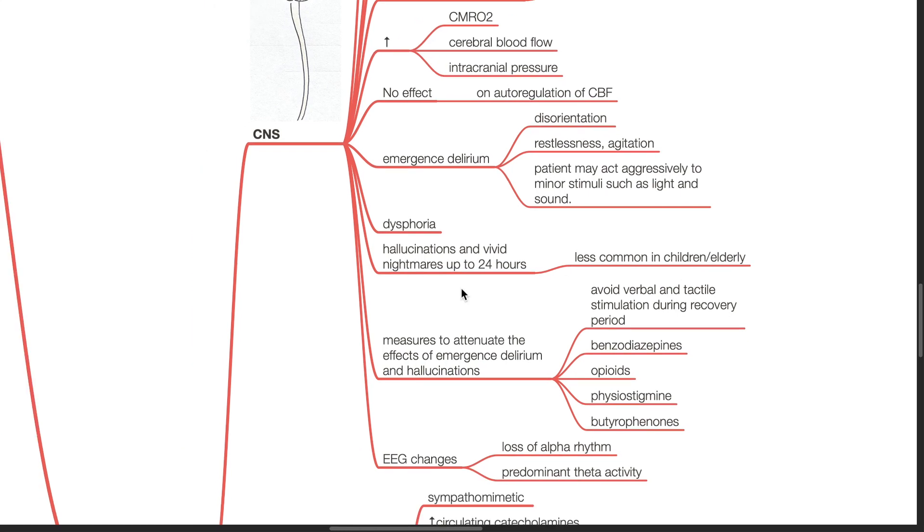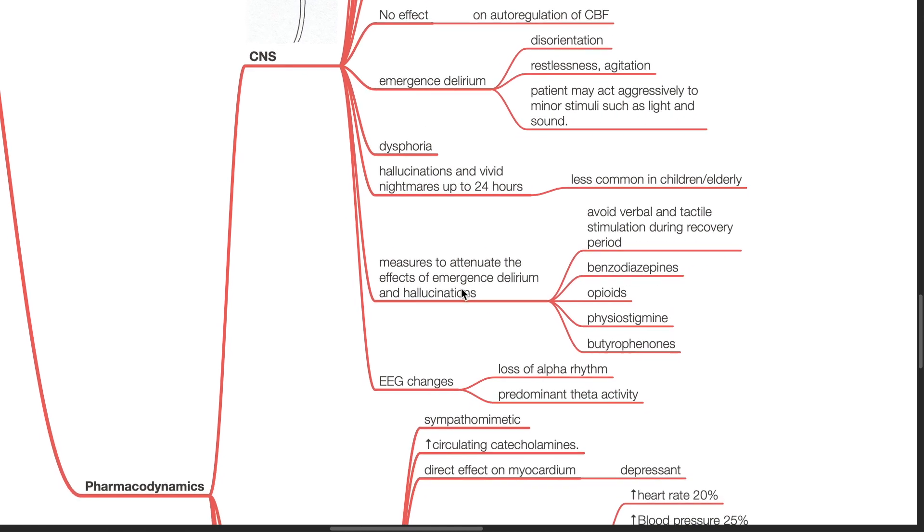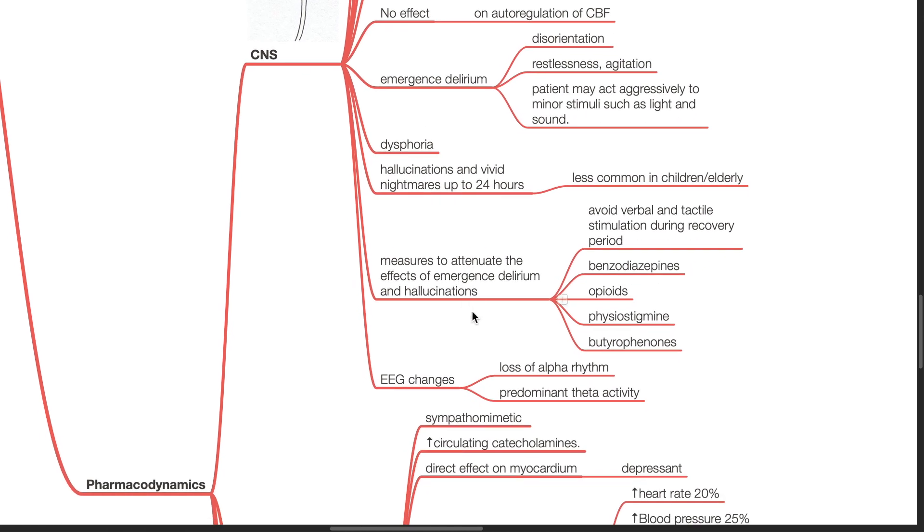Ketamine can cause dysphoria. Hallucinations and vivid nightmares can occur up to 24 hours after ketamine administration. However, this is less common in children and elderly.